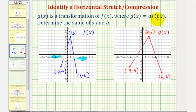Looking at our equation, g of x equals a times f of bx. Because we don't have a vertical stretch or compression, a would be 1. So our goal here is to find the value of b, which affects the horizontal stretch or compression.